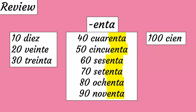Let's review. 10, 20, 30, and 100 do not follow any particular pattern, so you have to memorize them individually. This group of numbers — 40 through 90 — they all end in ENTA, and the beginning of each number is very similar to the tens they represent.